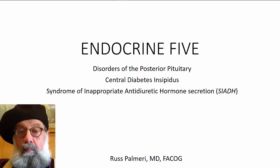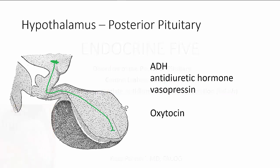Welcome to the fifth lecture in our series on the endocrine system. Today we will be looking at disorders of antidiuretic hormone. For a review of antidiuretic hormone physiology, please see earlier lectures in this series — a link is provided in the show notes. The two hormones made in the hypothalamus and stored in the posterior pituitary are antidiuretic hormone (ADH), arginine vasopressin, or simply vasopressin, and oxytocin.